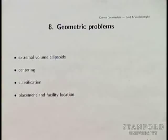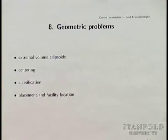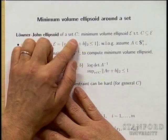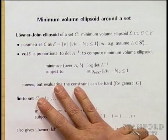We'll move on to our last generic family of applications, which are geometric problems. These come up all the time. We'll start with some of the least obvious: extremal volume ellipsoids. These are among the most interesting and least obvious applications — it's least obvious what you can do in these cases. The Löwner-John ellipsoid of a set C, which need not be convex, is the minimum volume ellipsoid that covers the set.